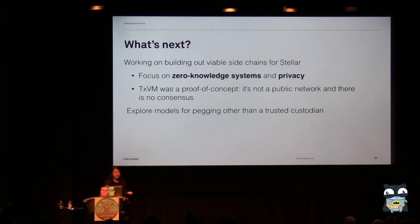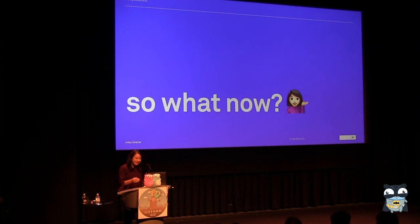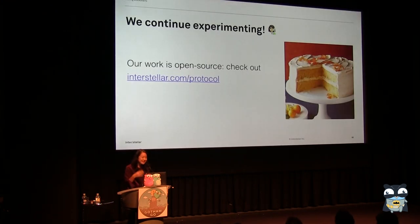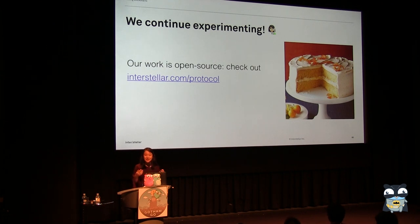We'll also be exploring models for pegging other than the trusted custodian setup, since in most cases people want the benefits of the blockchain — one of the key ones being not having to trust single entities like a custodian. Basically all of our work is open source, so if you're interested you can check it all out at interstellar.com/protocol. We're going to continue working on these things, and if you're excited about blockchain development it's definitely a great way to get involved. Thank you.